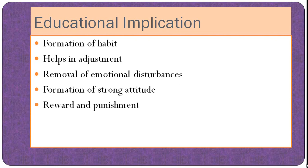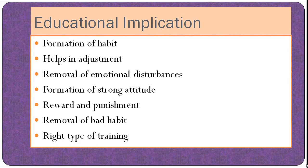Fourth is the formation of a strong attitude: classical conditioning can be used to develop favorable or unfavorable attitudes towards learning, teachers, and school. Fifth is reward and punishment: rewards strengthen the bond of good learning, and punishment discourages bad learning. Sixth is the removal of bad habits — with the help of this method, bad habits may be broken. Finally, it emphasizes the importance of the right type of training during the early period of life.